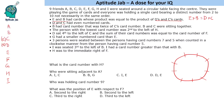B had a card that was twice C's card number, so B = 2 × C. Let us make two cases. If C = 2, then B = 4. If C = 4, then B = 8. We cannot go beyond this since the numbers only go up to 10. So the two possibilities are (C=2, B=4) or (C=4, B=8).